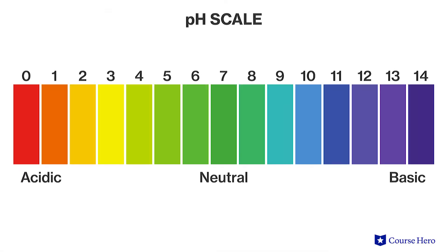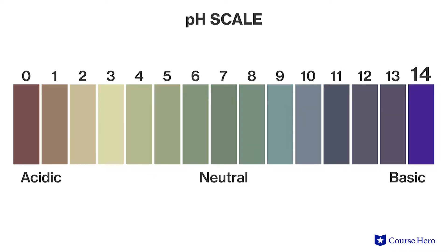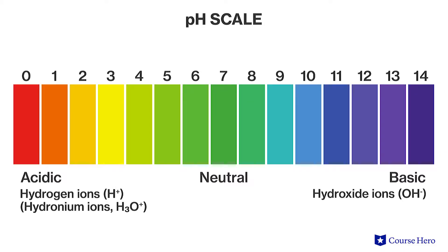pH is represented as a number generally ranging from zero if the solution is very acidic to 14 if the solution is very basic. Specifically, pH refers to the proportion of hydrogen ions or hydronium ions, which are acidic, to hydroxide ions, which are basic.